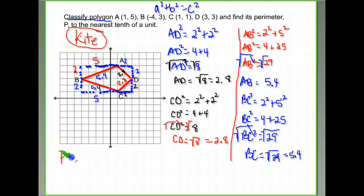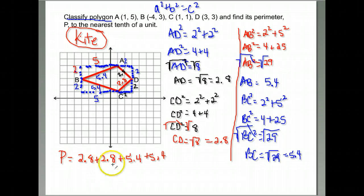The second part was to find the perimeter. Well, to find the perimeter of something, you add its sides together. So the perimeter is going to be 2.8 plus 2.8. Those are my two short sides, plus the 5.4 and the 5.4. You can write that as 2 times 2.8 plus 2 times 5.4, if you wish. So, when we add those together, we get 16.4. So I've answered the kite, and its perimeter is 16.4.